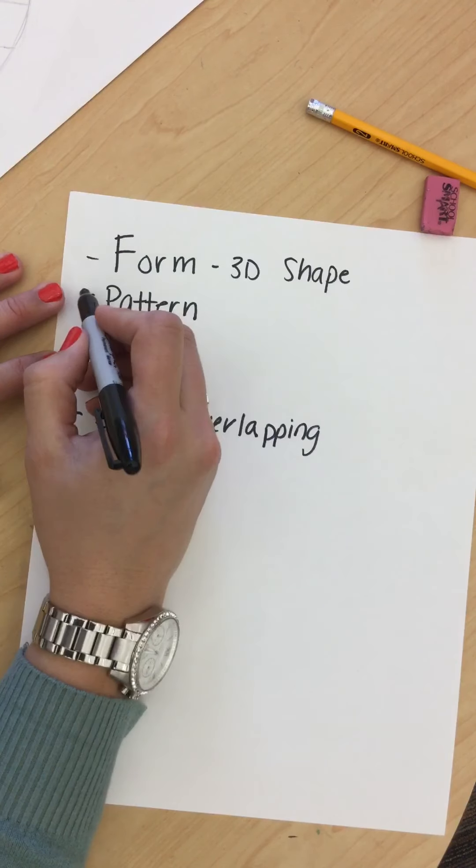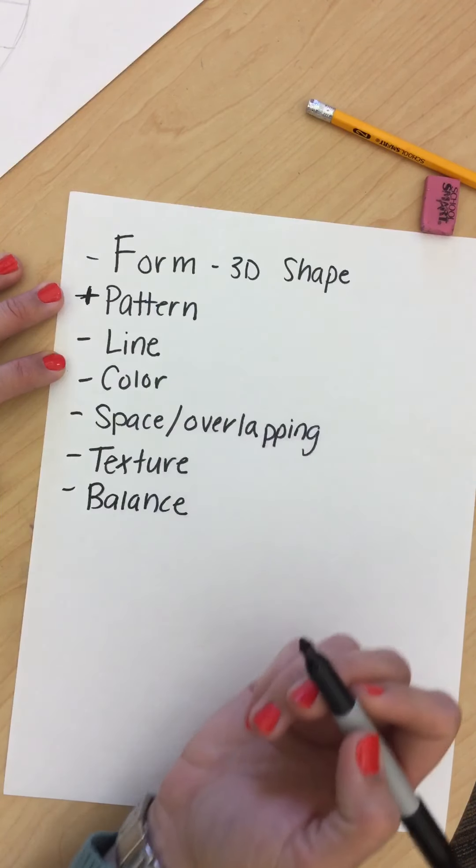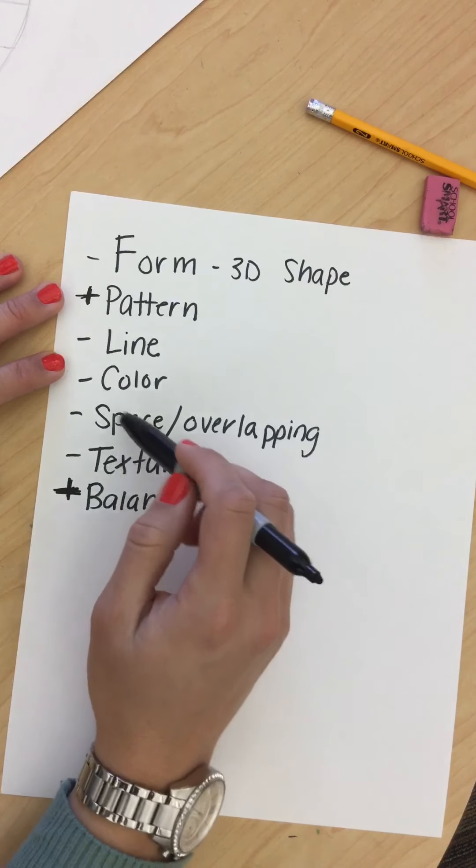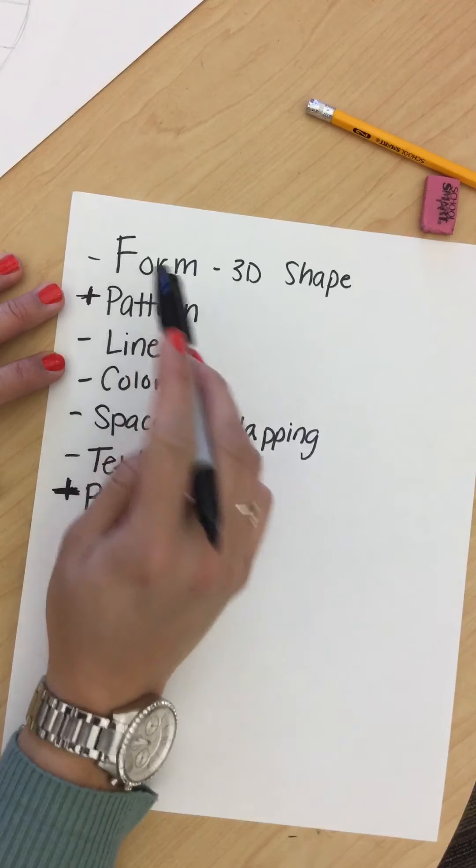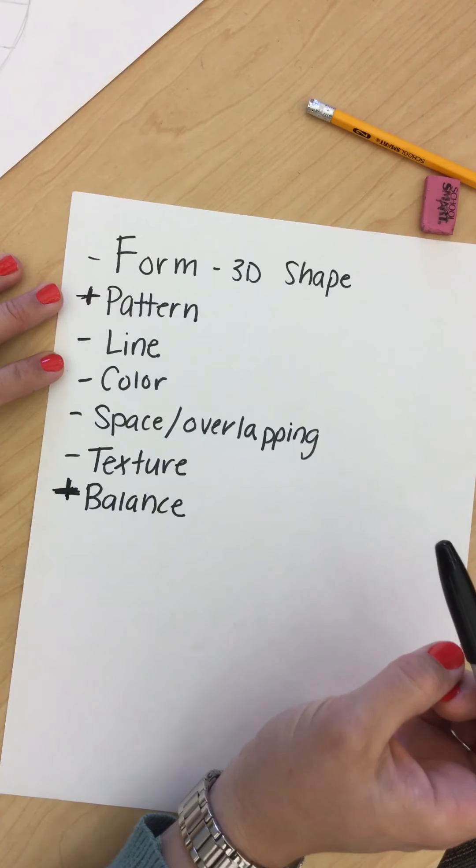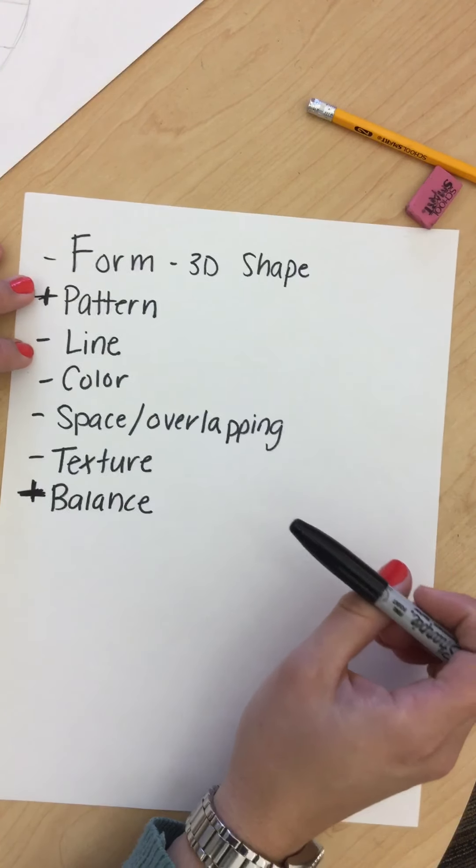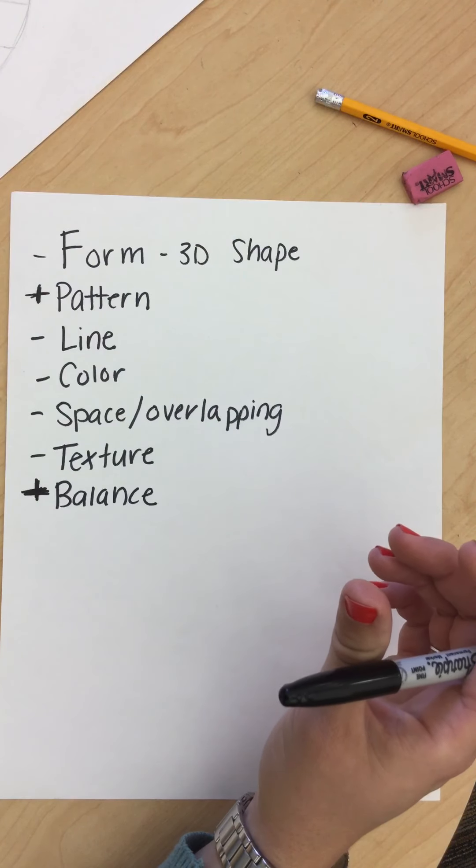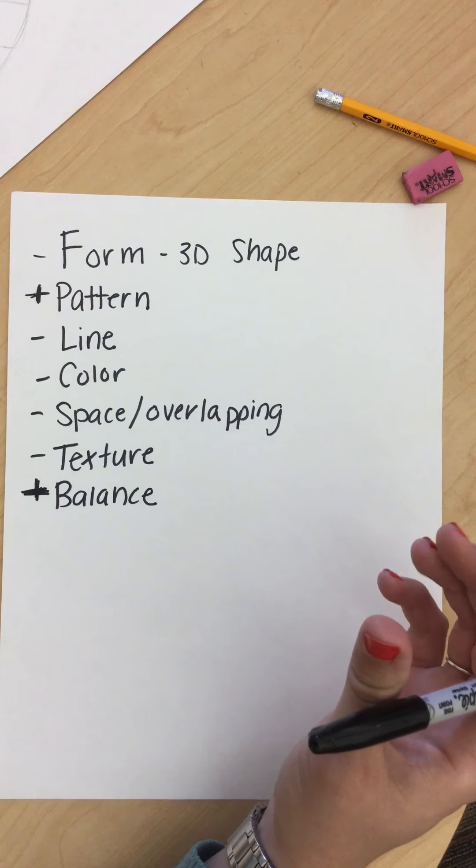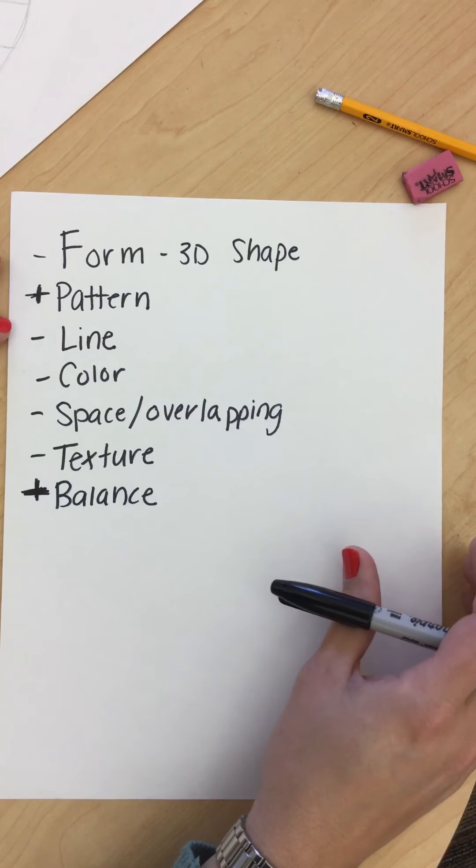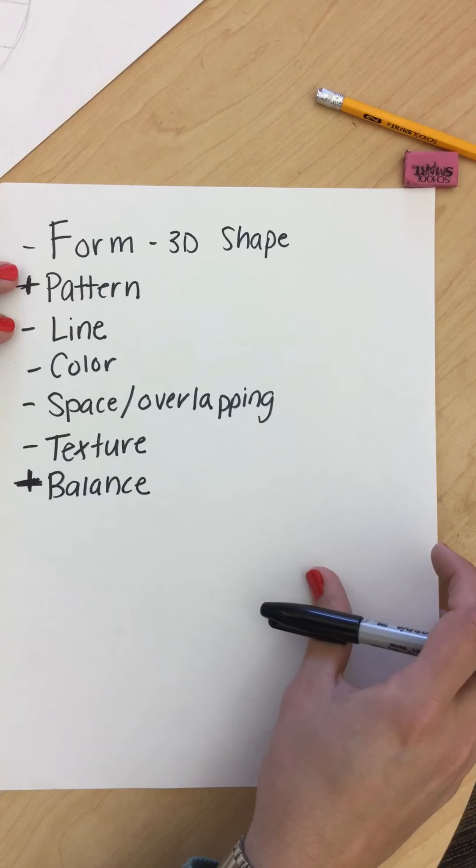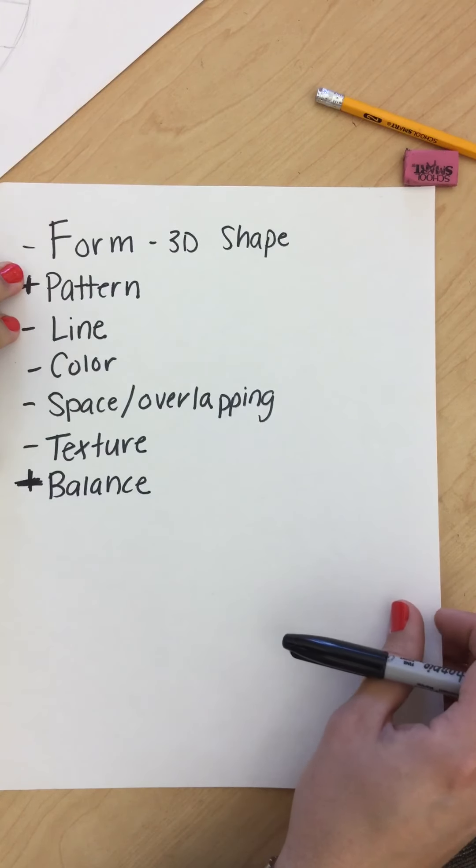Now, pattern and balance, these are principles of design. Texture, space, color, line, and form, those are elements of art. All of the elements of art and principles of design are supposed to be things that you could add to your artwork to make them more interesting, nicer to look at, a well-rounded piece of artwork.